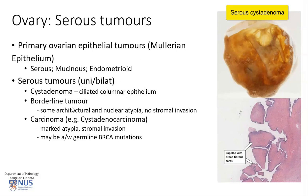We also have the borderline tumors, which show some degree of architectural complexity — for example, more complex papillary structures — and there is also some nuclear atypia, but still no stromal invasion. And then at the malignant end, there is the serous carcinoma, or if the tumor is very cystic, the serous cyst adenocarcinoma. These have much more marked architectural as well as cytologic or nuclear atypia, and also show stromal invasion.